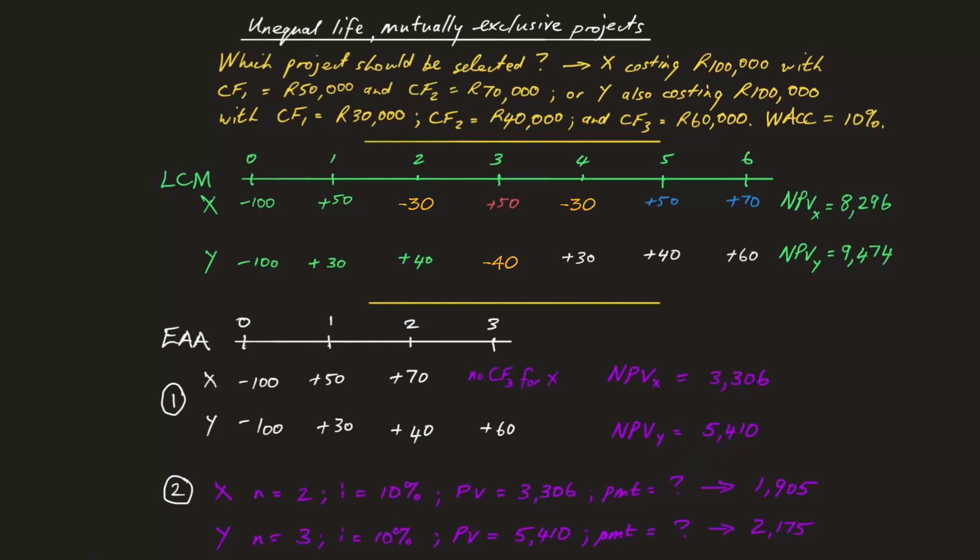Using the TVM functionality of your financial calculator, you solve for the payment, given the relevant present value, time period, and a discount rate of 10% for both. The project with the higher equivalent annual annuity is the one that should be selected.